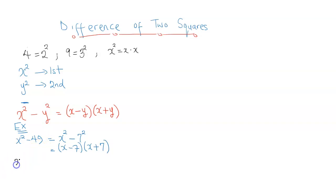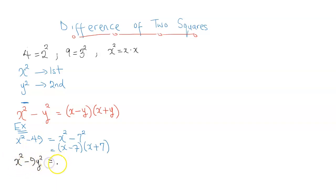A little bit more complicated this time around: x squared minus 9y squared. Now this doesn't look like a difference of two squares, but it is. What we have to do is — we already have one square on the left part of the negative sign, so we retain that. Now 9 is a squared number, so it can be written as 3 squared. And we already have y squared.